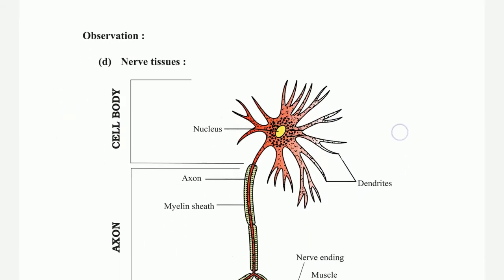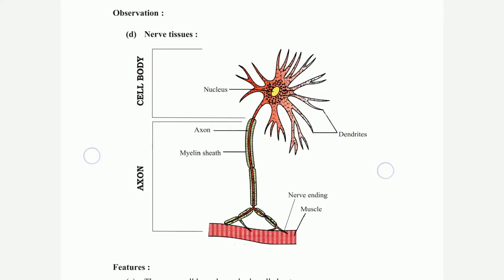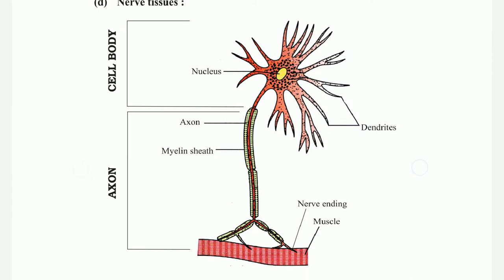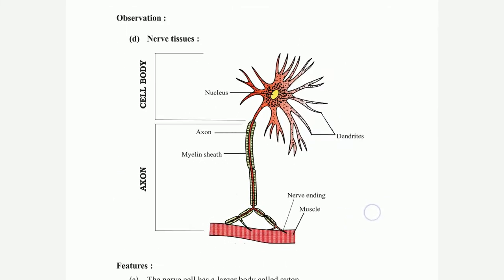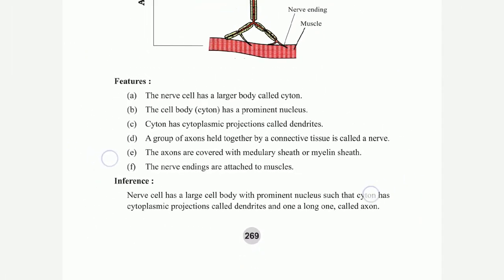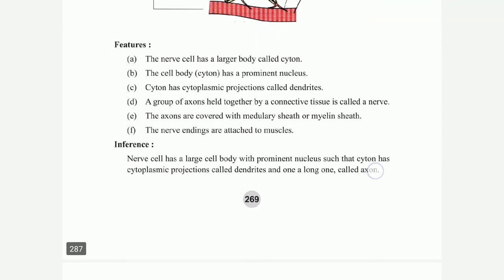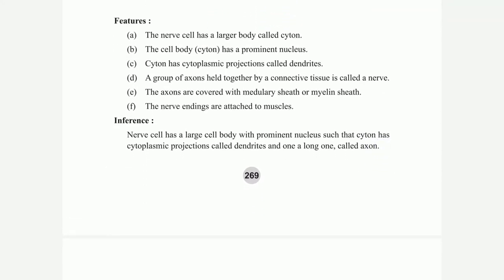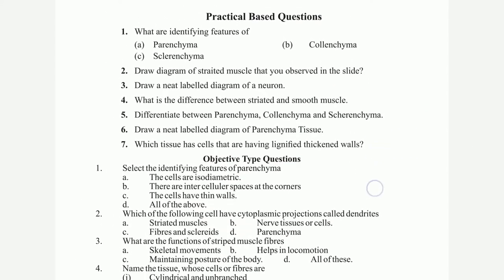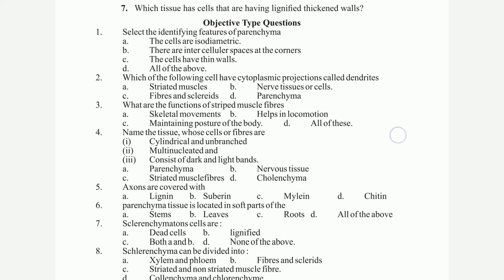Nerve cell observation: nerve cell body with axon, nerve end, muscle, nucleus. Features: the nerve cell body contains a nucleus. Objective questions: what are the identifying features?